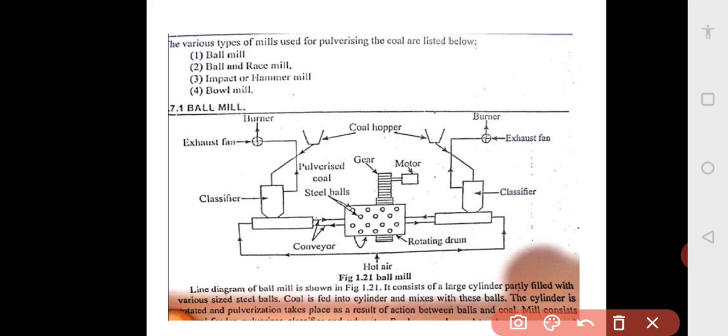Because the lump coal is there and the steel balls are rotating, the steel balls hit the coal particles. Over time, the coal particles become pulverized. This pulverized coal goes back to the classifier. Hot air is supplied from the bottom, comes to the classifier, and the pulverized coal is taken by the classifier and sent to the burner.